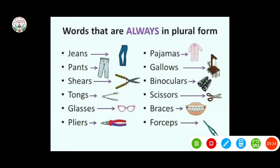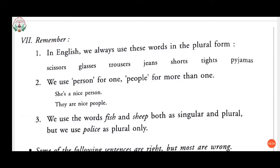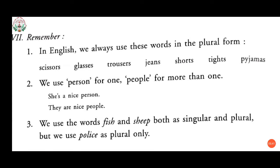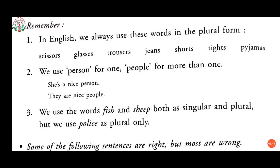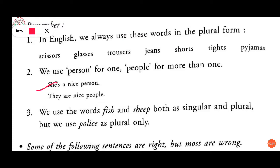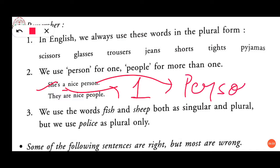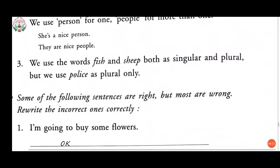Now, second point: we use 'person' for one and 'people' for more than one. For example: 'She is a nice person' — we are talking about only one person, that's why we use person. But 'They are nice people' — because 'they' refers to more than one, and for more than one we use 'people.'